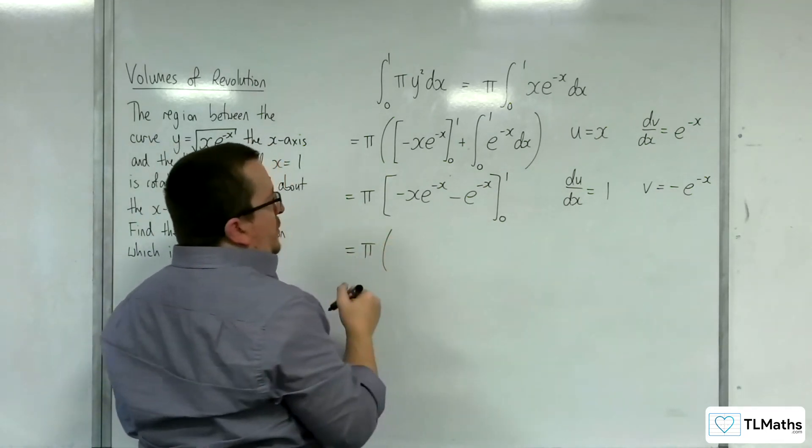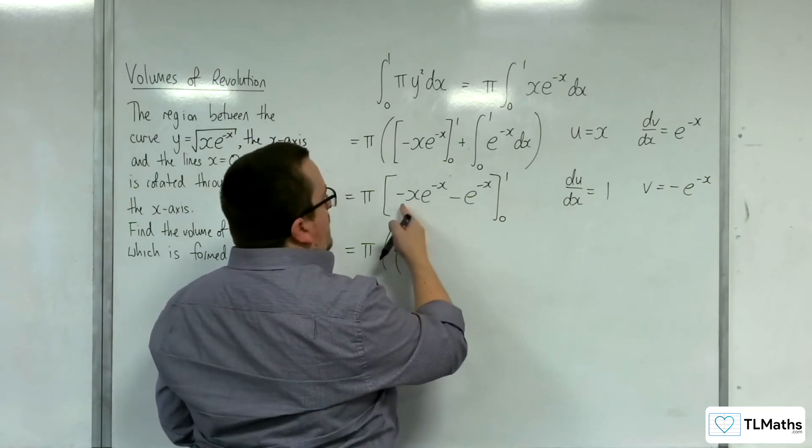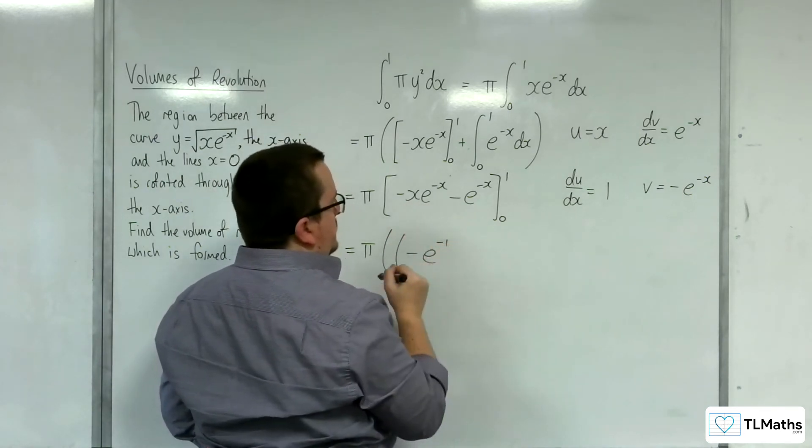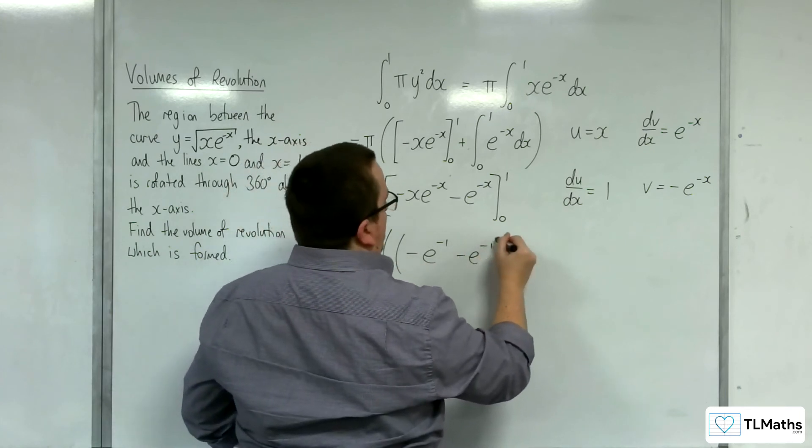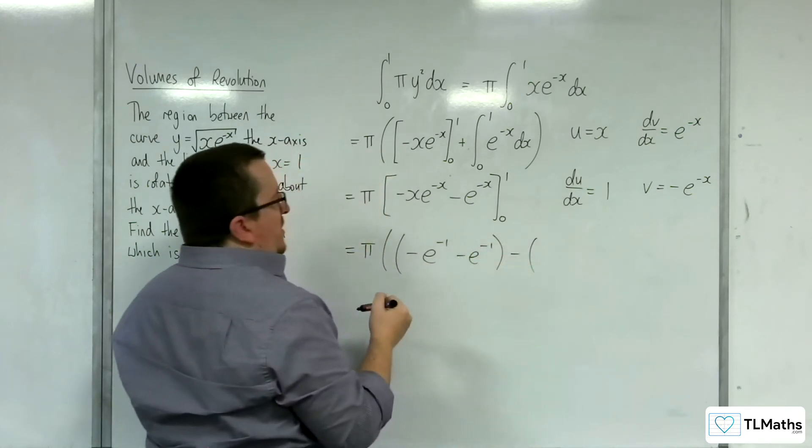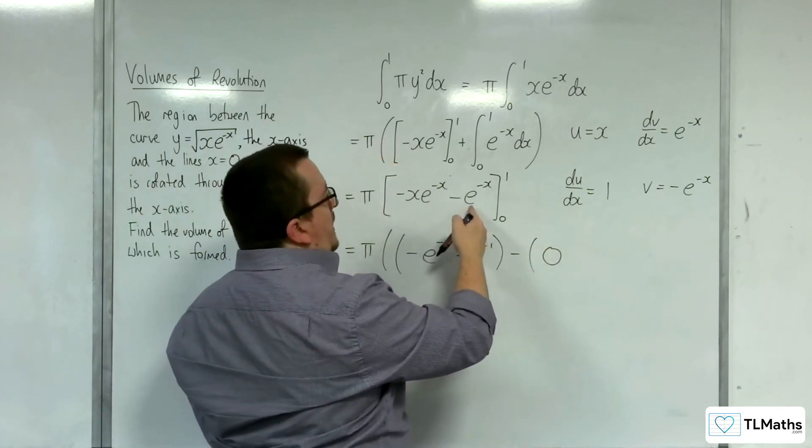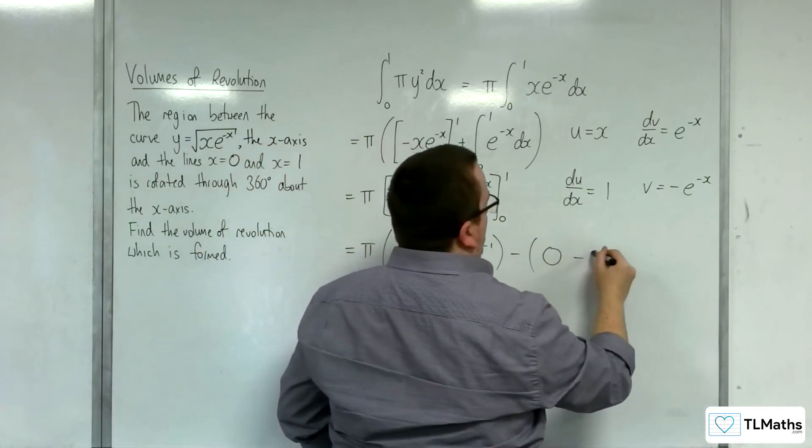So now, I'm going to substitute in the 1, and we get minus 1 times e to the minus 1, take away e to the minus 1. Then substituting the 0, we get 0, then take away e to the 0, so take away 1.